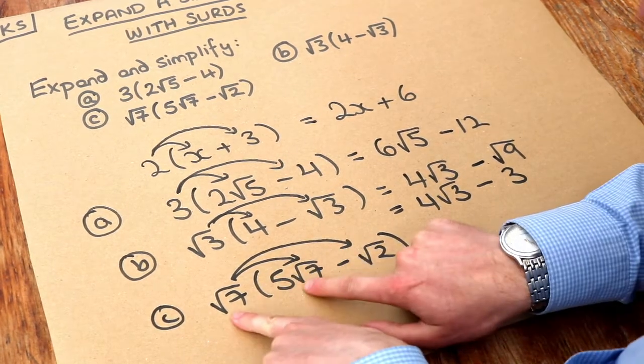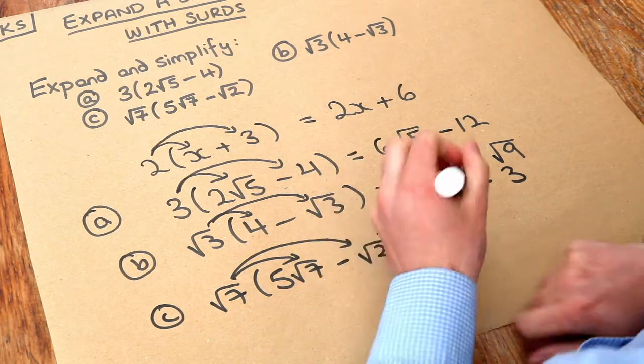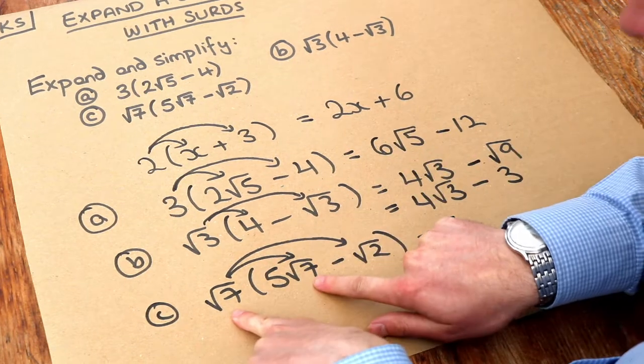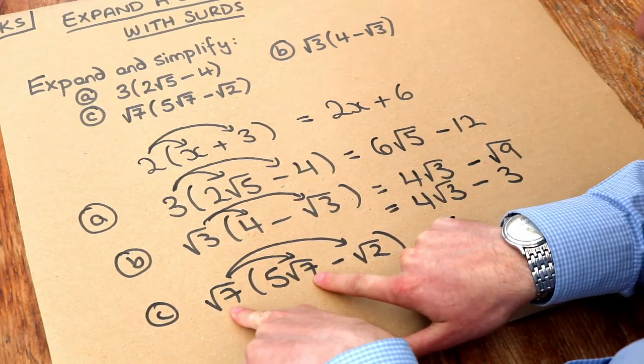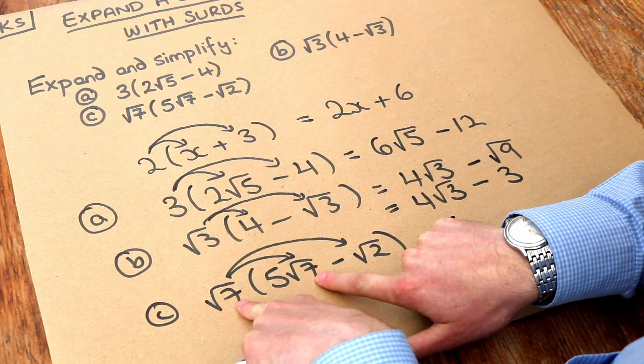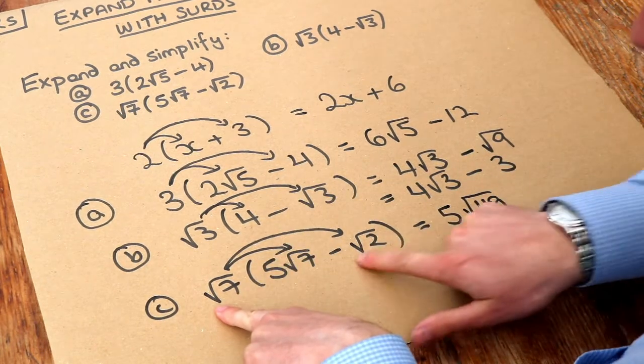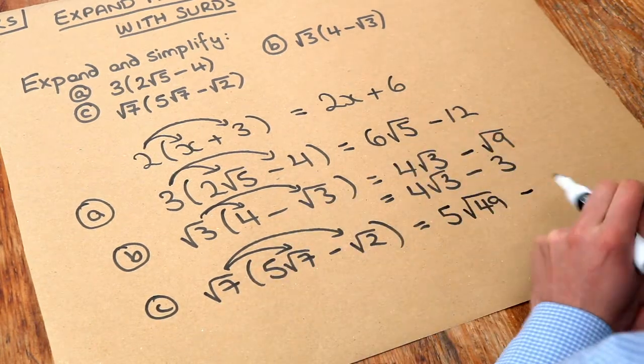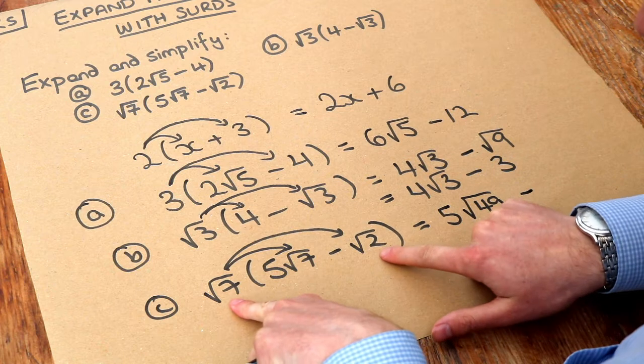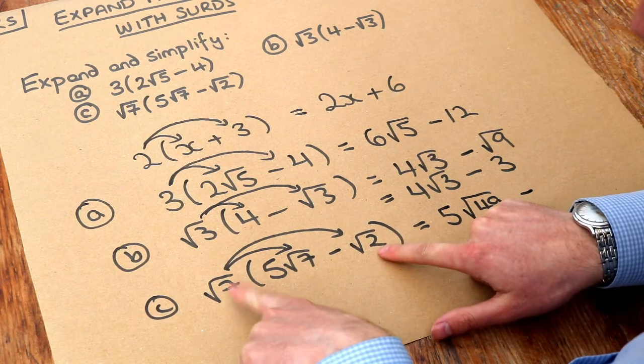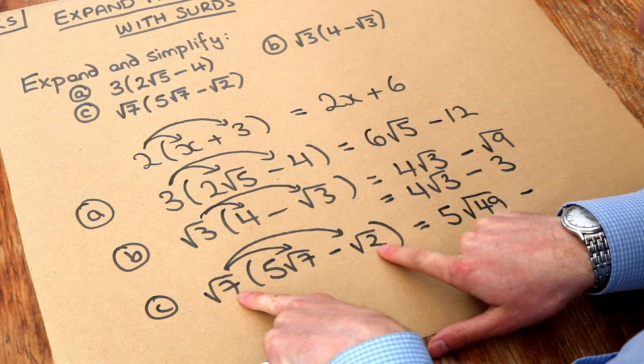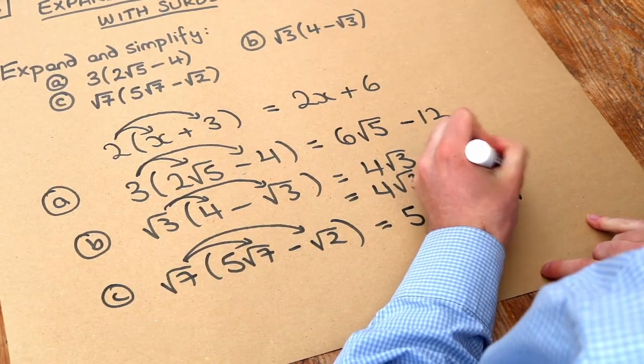We multiply the non-surds together first. The only non-surd here is the 5. And then we times the surds together. So the root 7 times the root 7. 7 times 7 is 49. So we get root 49. And then positive times negative is negative so it's going to be a minus here. Now what's root 7 times root 2? We're multiplying two surds together so we just multiply those numbers together. 7 times 2 is 14. So we get root 14.